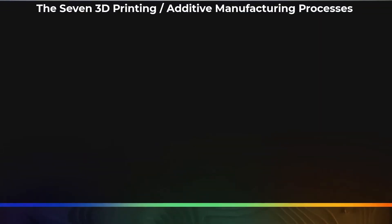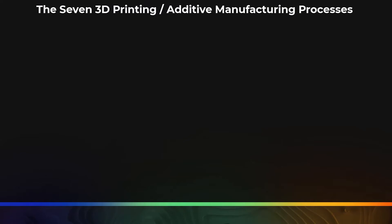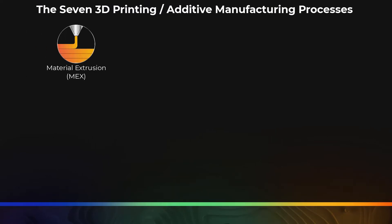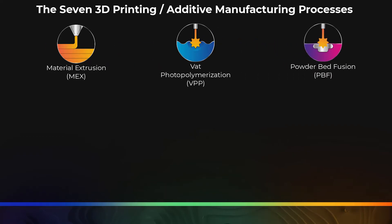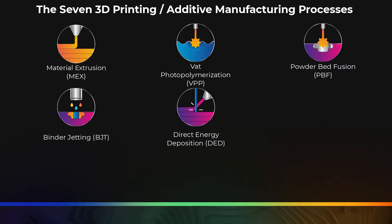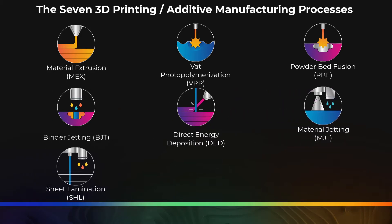Those seven processes are as follows: Material Extrusion, VAT Photopolymerization, Powder Bed Fusion, Binder Jetting (BJT), Direct Energy Deposition, Material Jetting (MJT), and finally Sheet Lamination.